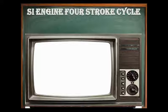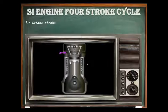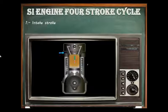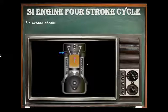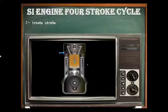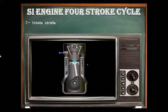For the first stroke, the intake or suction stroke: this stroke starts when the piston is at the top dead center. When it moves downward it creates suction and draws the fuel-air mixture into the cylinder. The inlet valve is open at this time and the exhaust valve is closed. When the piston reaches the bottom dead center, the inlet valve closes and the suction stroke ends. This all takes place in 180 degrees of crankshaft rotation.